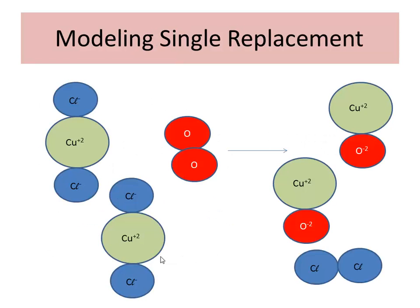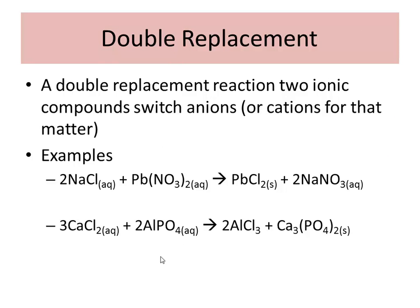Double replacement reactions occur when two ionic compounds switch anions or cations, depending on which way you look at it.